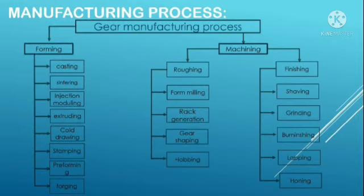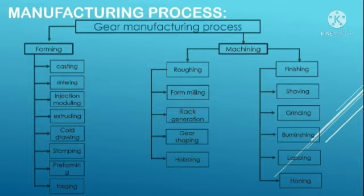Let us discuss the process of manufacturing of a gear. Gear manufacturing can be divided into two categories: forming and machining. Forming consists of direct casting, molding, drawing or extraction of tooth forms in molten, powdered, or heat-softened materials. Machining involves roughing and finishing operations. In roughing, it involves further processes like form milling, rack generation, gear shaping and hobbing.